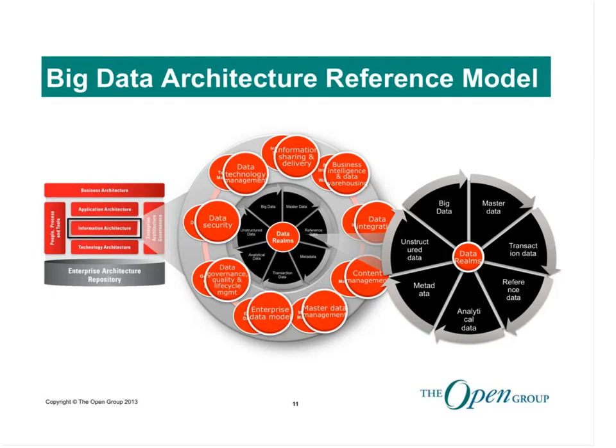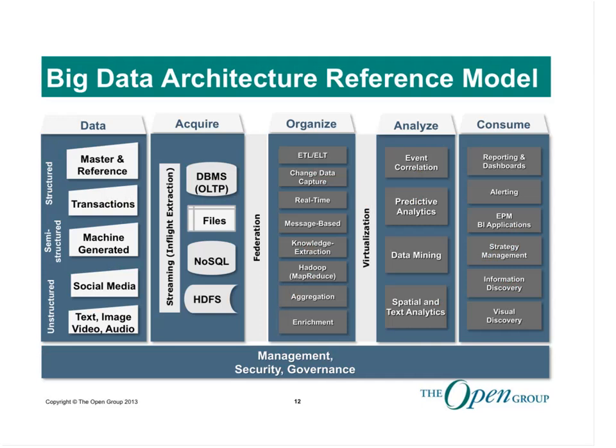Here is a holistic view of an integrated big data conceptual capability model. As various data come in and are captured, they can be stored and processed in traditional RDBMS, files, HDFS, NoSQL databases, or a streaming event model. One of the critical components that links big data to the rest of the data realms is the integration and data processing layer under the Organize tab. This integration layer needs to extend across all data types and domains and bridge the gap between traditional and new data acquisition and processing frameworks.